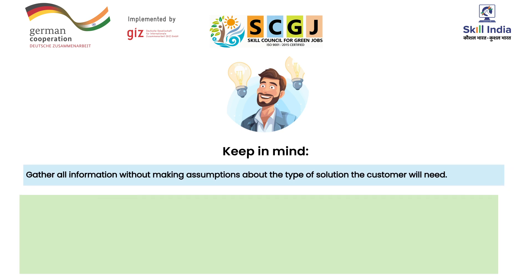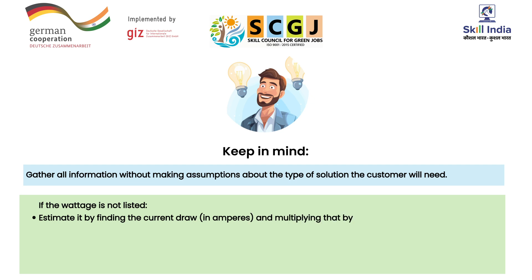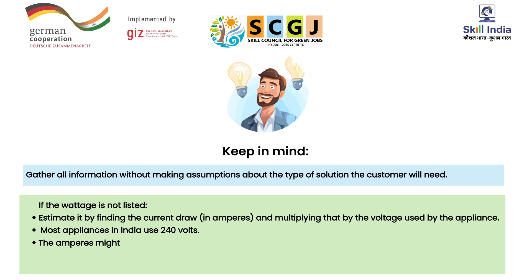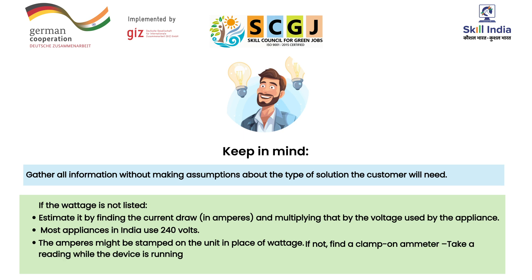It's not necessary that voltage is always listed. You can still estimate it by finding the current drawn and multiplying that by the voltage used by the appliance. Generally, most appliances in India use 240 volts. The amperes might be stamped on the unit in place of voltage, so find a clamp-on ammeter and take a reading while the device is running. This is the actual amount of current being used at that instant. Remember that the initial current drawn by a motor will be high.